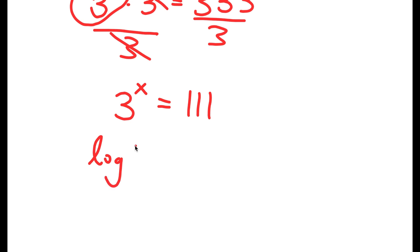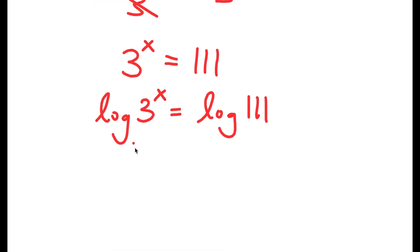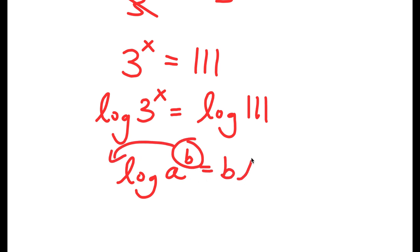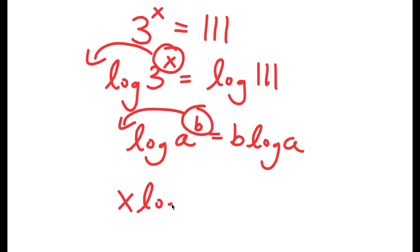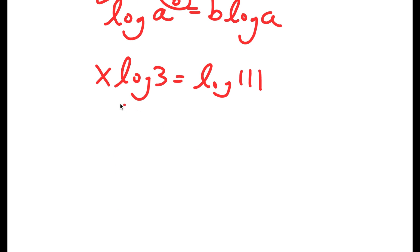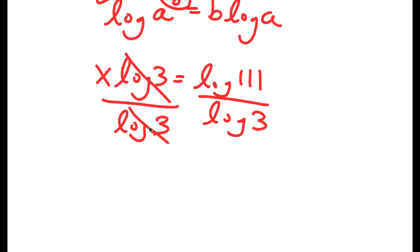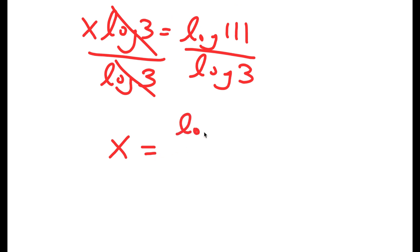Taking the log on both sides gives log of 3 to the power of x equals log of 111. Using the log power rule — if I have log a to the power of b, I can move b to the front, giving b times log a — I can move x to the front. So I get x times log 3 equals log 111. Dividing both sides by log 3, I get x equals log 111 over log 3.